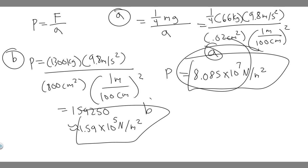So 1.59 × 10⁵ N/m² is the pressure for B, the elephant. And 8.085 × 10⁷ N/m² is your answer for A. Hopefully you found this useful.